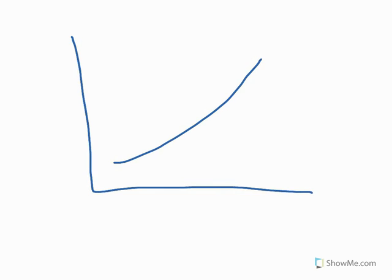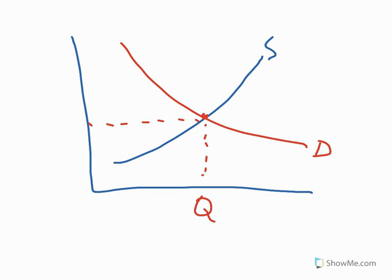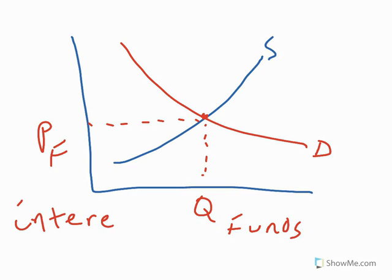If we look at a supply-demand graph for the loanable funds model, we will see that they are very similar to the supply-demand graph of goods and services, where these two intersect becomes the equilibrium point in terms of quantity of funds and the price of funds. But when we're talking about loans, the price of any loan is the interest that we pay or is charged on that loan. So where the supply and demand of loanable funds intersects becomes the equilibrium interest rate.